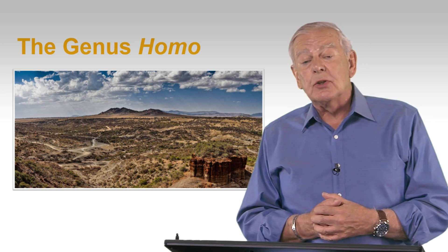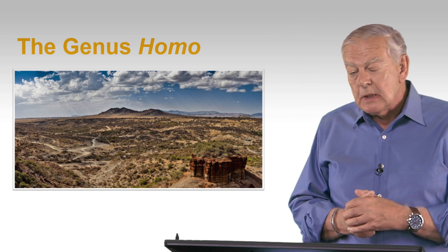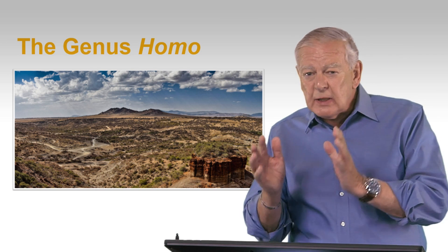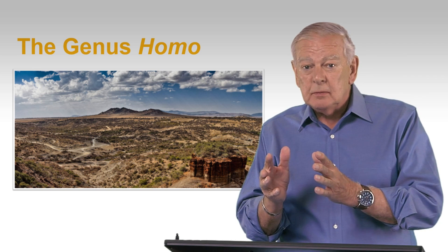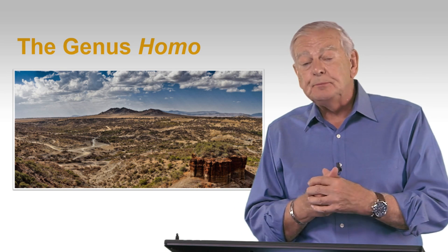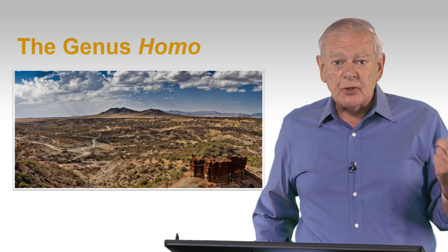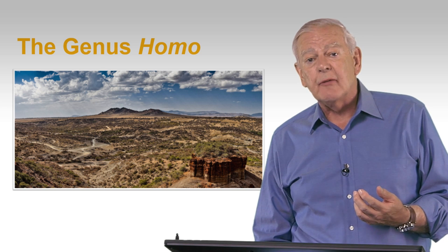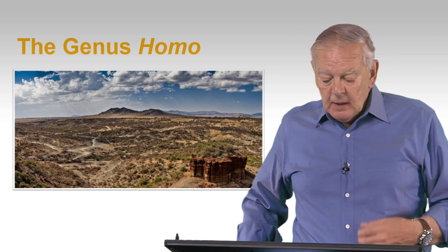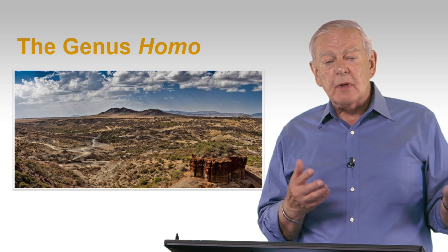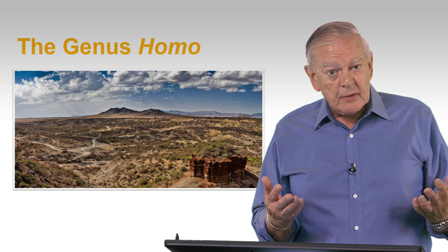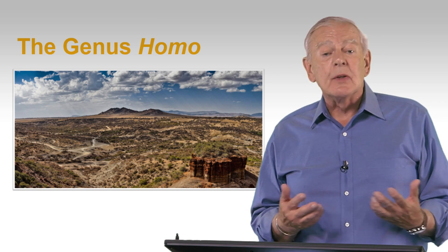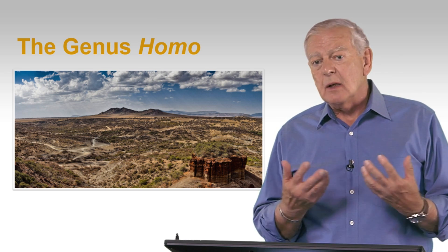I'm showing a picture of Olduvai Gorge because Olduvai was an important place in our thinking about what differentiates Homo — or the Latin for man — from Australopithecus, meaning, as I've said before, in South Africa they call them ape men. But what are the differences between Australopithecus and Homo? When did those differences arise, why did they arise, how did they arise, and what's the meaning of those differences?